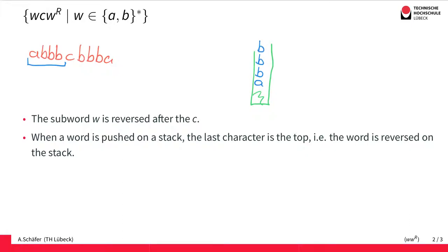So what we realize here is that the first letter from the input is the bottom-most letter on the stack, whereas the last letter is the top-most. So what we have here is actually that the word W is reversed on the stack. And that's actually quite practical.